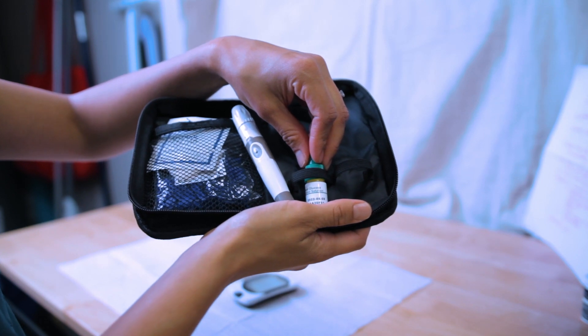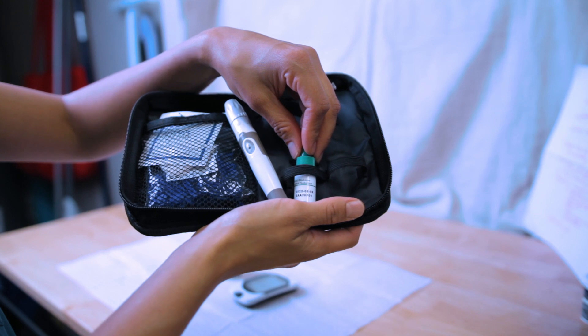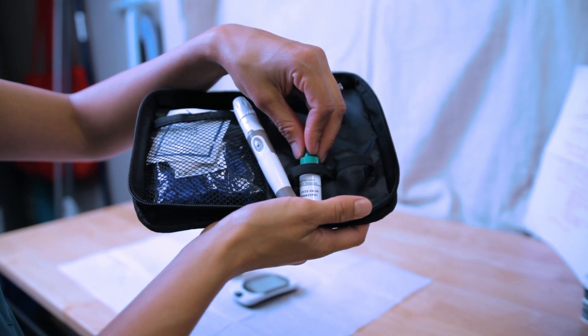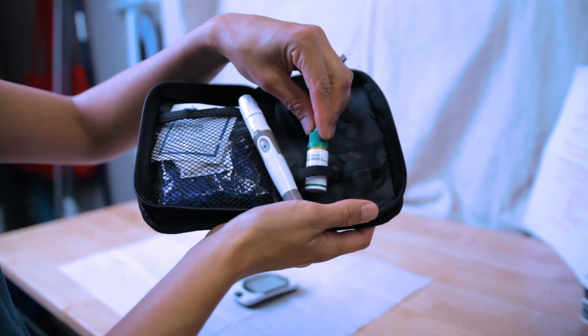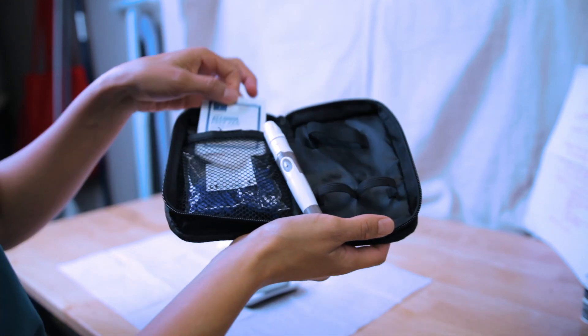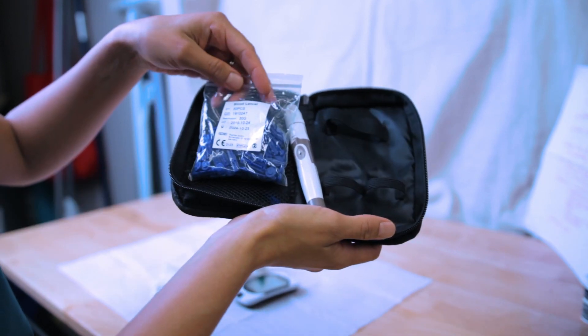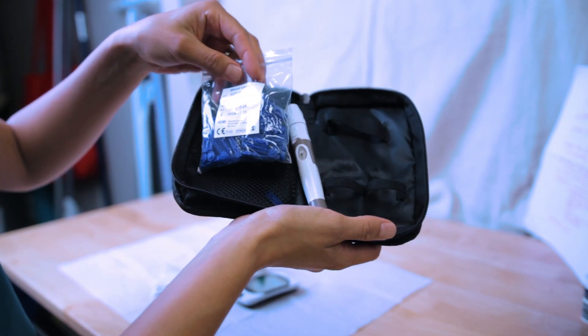control solution—check the expiration date. Once it's open, it's only good for three months, and this is done q-shift as your quality control check to make sure your machine is working and functioning properly. You have your alcohol prep, your two-by-two gauze, and then the blood lancets, which is a 30-gauge. Make sure